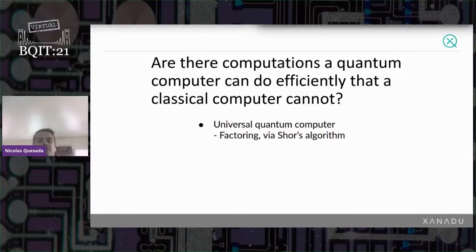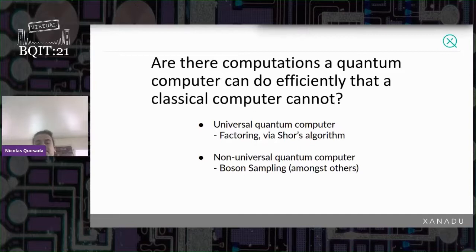But since currently we don't have such a universal quantum computer, we have to resort to simpler machines. In that context, it was proposed by Aaronson and Arkhipov that you can actually construct a very simple linear optics machine in which you send bosons, have them interfere, and you can show that this very simple machine can do a computation that a classical computer cannot do efficiently.